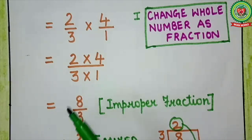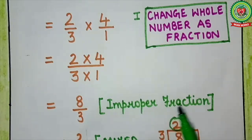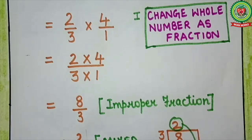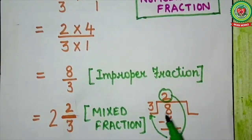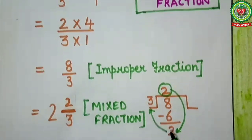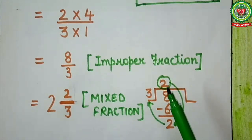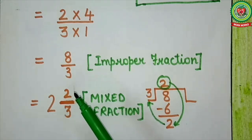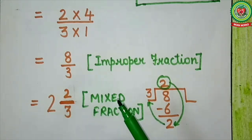So here it will come 8 upon 3. As the numerator is bigger than the denominator, it is an improper fraction. So we will change it into a mixed fraction. Divide 8 by 3 — 3 twos are 6, minus 2. The answer will come 2 whole number 2 upon 3, which is a mixed fraction.